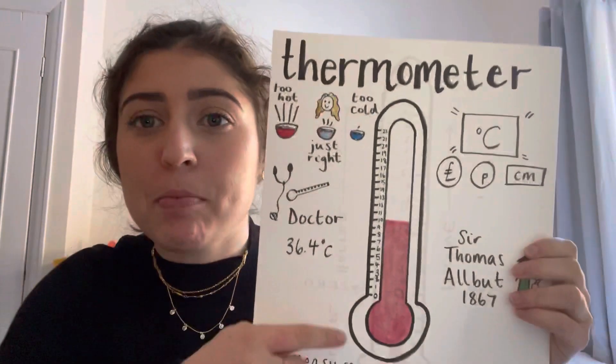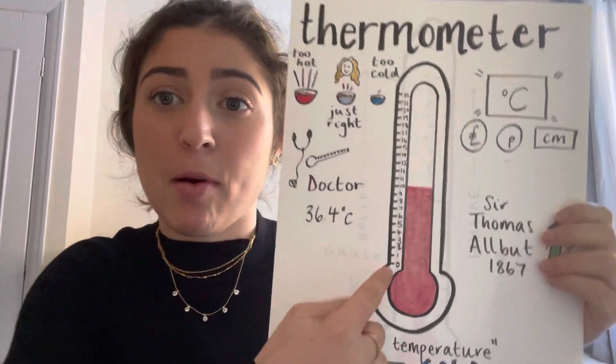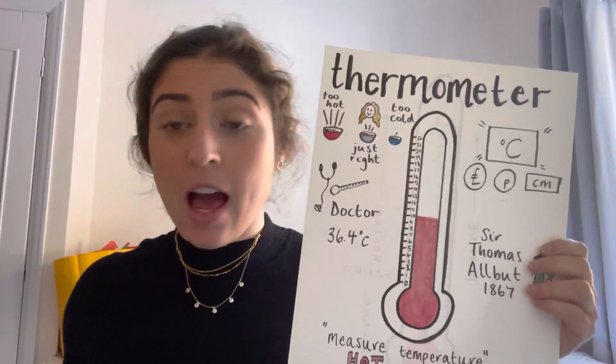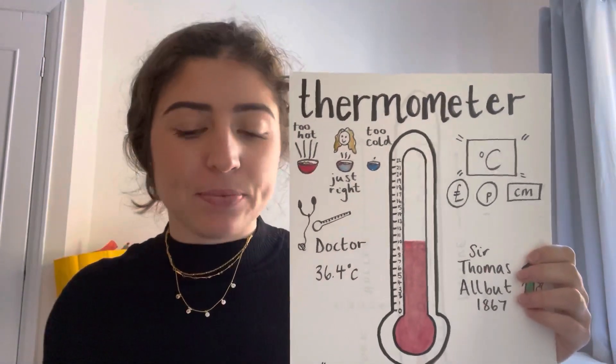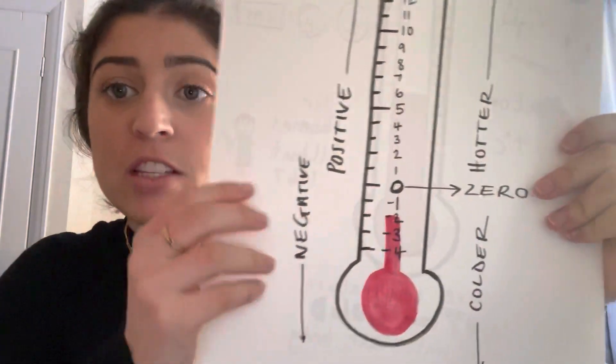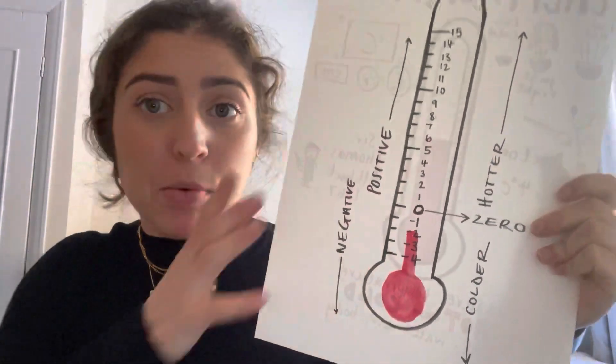We've learnt all about the thermometer and how you can have the thermometer in 1s, 2s, 5s or 10s. However, some thermometers are even more different than that. Some thermometers have positive and negative numbers, so that means there are numbers that go underneath zero, but we'll go back to this one in a minute.